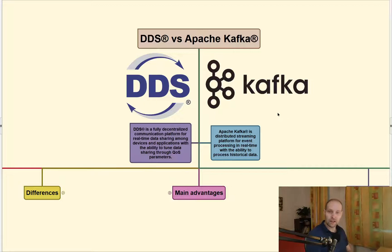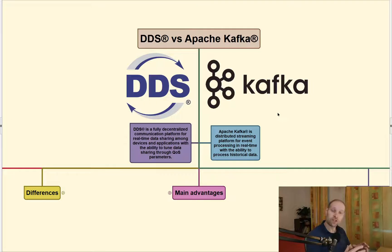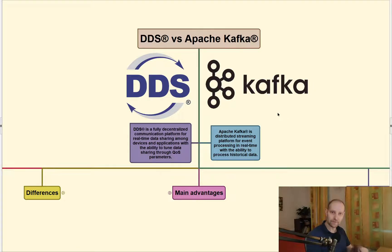What is Apache Kafka? Apache Kafka is a different beast because it's a distributed streaming platform for data processing, and you can also process historical data, and all of that you can do in real time.